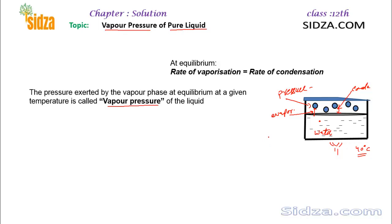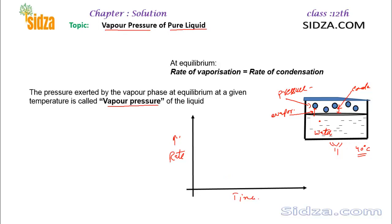If we plot a graph of reaction rate — evaporation or condensation — versus time, initially the rate of evaporation is high. Once you close the vessel, the rate of evaporation starts high but decreases with time. So the graph for the rate of evaporation decreases like this.